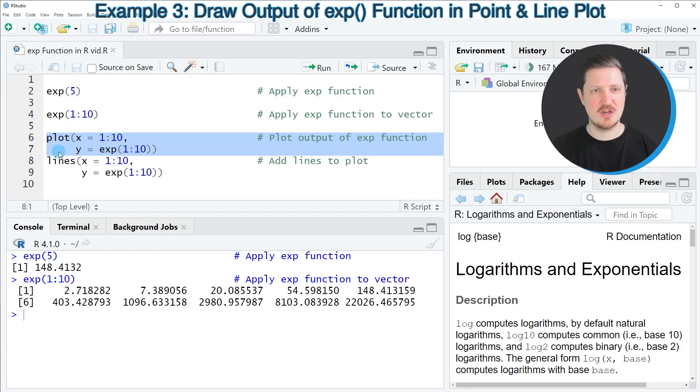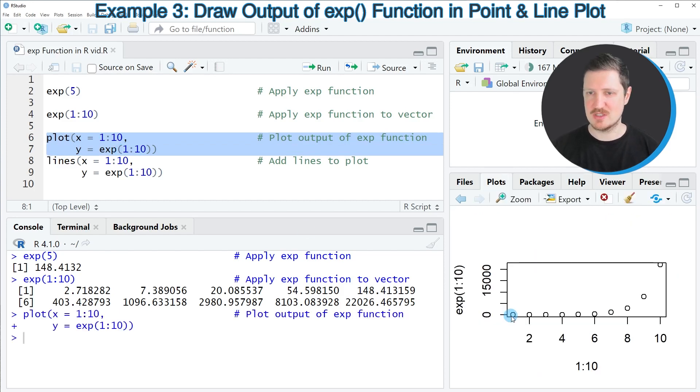So in lines 6 and 7, I'm using the EXP function to draw the exponential values that correspond to the values 1 to 10. So after running these lines of code, you can see that we have created a scatterplot, which is showing these 10 data points.